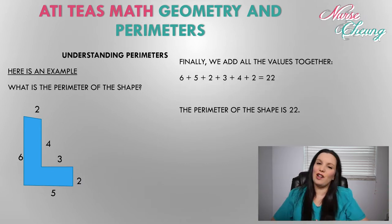Finally, all we need to do is add all of our values together. We have 6 plus 5 plus 2 plus 3 plus 4 plus 2 is equal to 22. The perimeter of this shape is equal to 22.